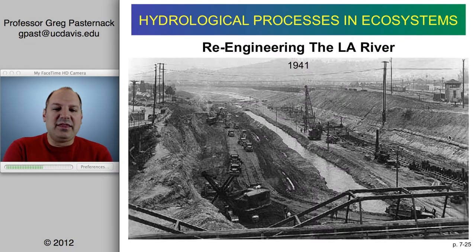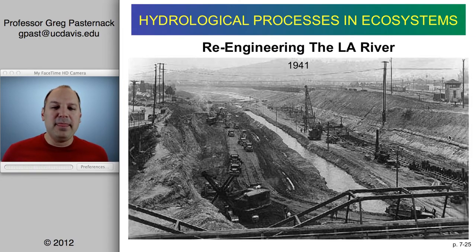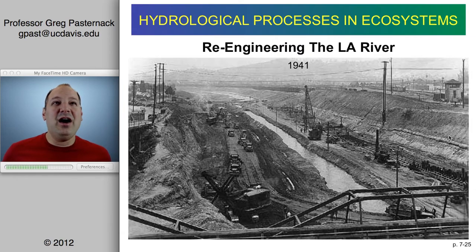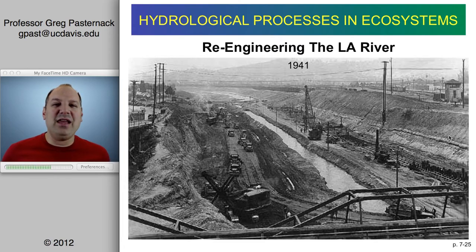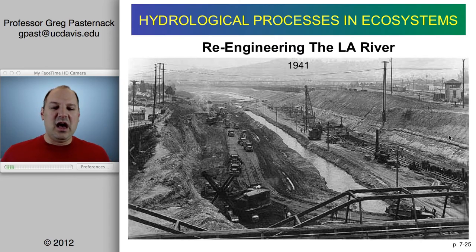That flood created a strong political drive that ultimately led to the reengineering of the LA River. But consider what LA was like in 1941 versus today — especially the growth since 1970. There's no way they could have engineered for today's conditions back then. Planning from 2010–2020 for conditions in 2100 is essentially impossible. The solution was just to turn the river into a concrete channel, with no flexibility built into the system.